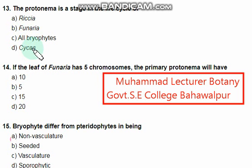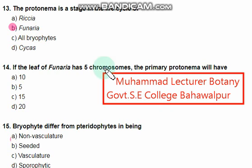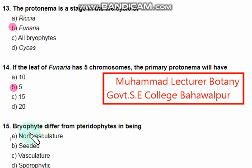The protonema stage is found in Funaria. If the leaf of Funaria has five chromosomes, the primary protonema will have how many chromosomes? The right answer is five chromosomes. Next, bryophytes differ from pterophytes in being non-vascular.